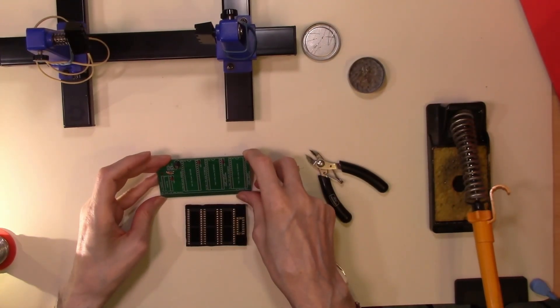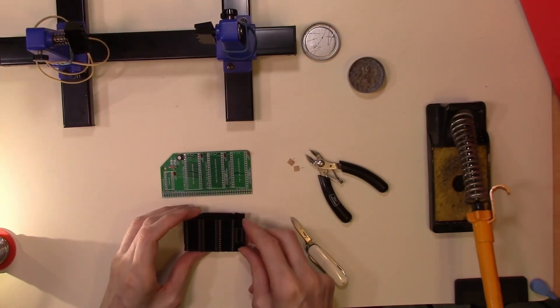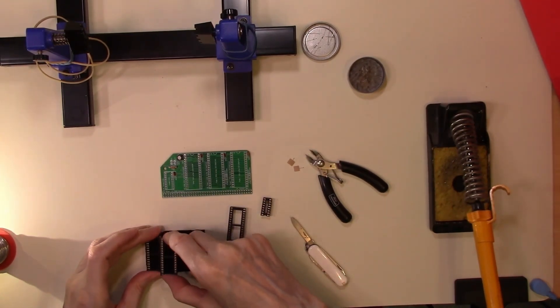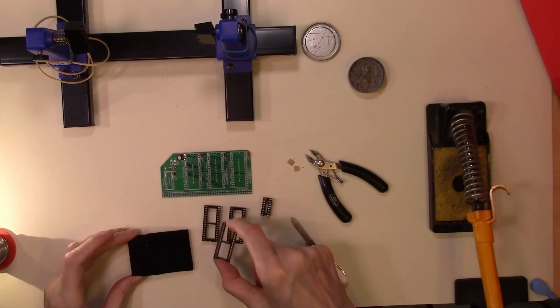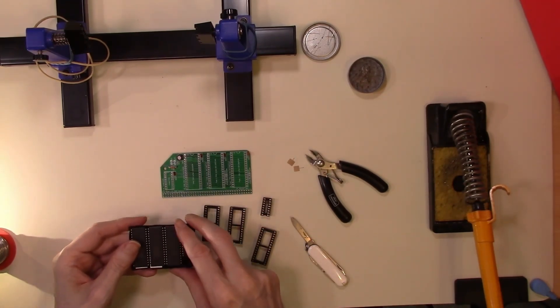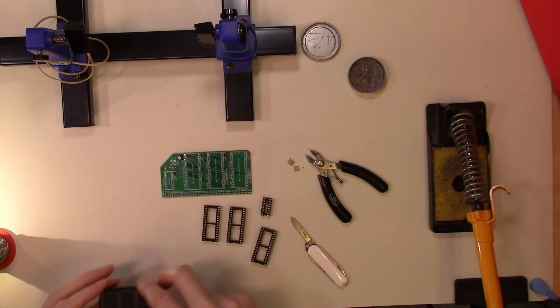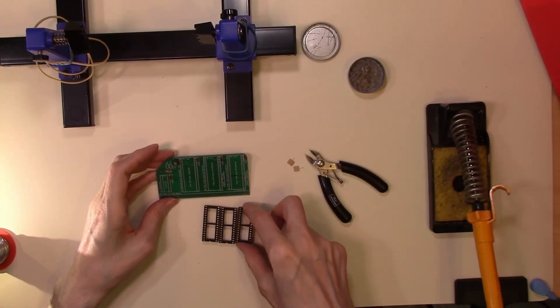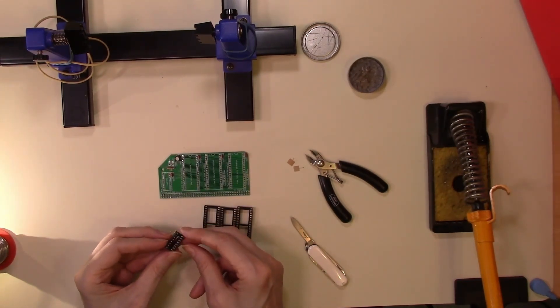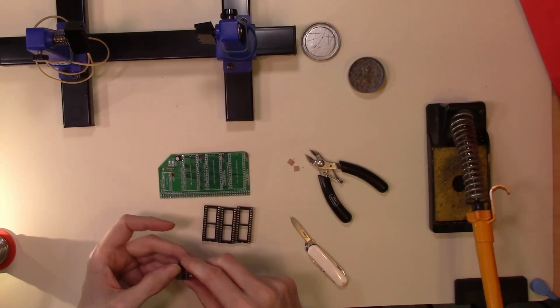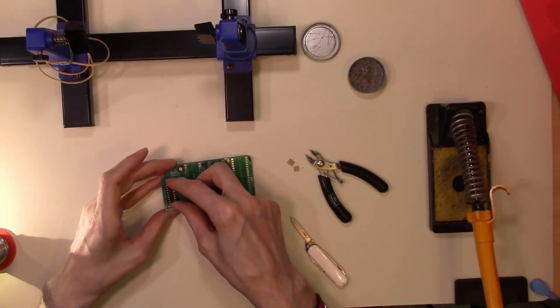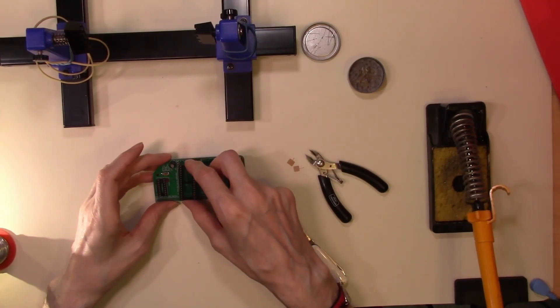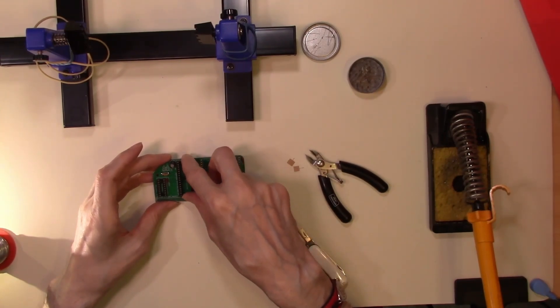These are our chips and the sockets into which they're going to go. So we will look to put these in place next. Once these are in place, we can then look to put the chips in. So we have three large sockets and one small socket. Just make sure we orientate these the right way.